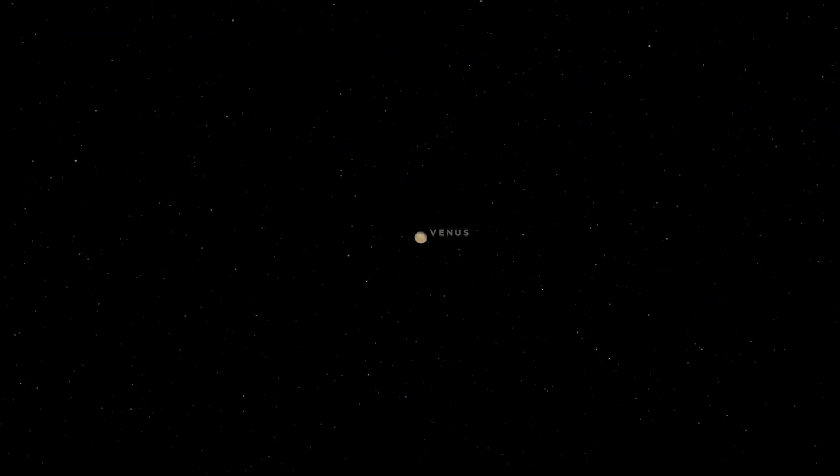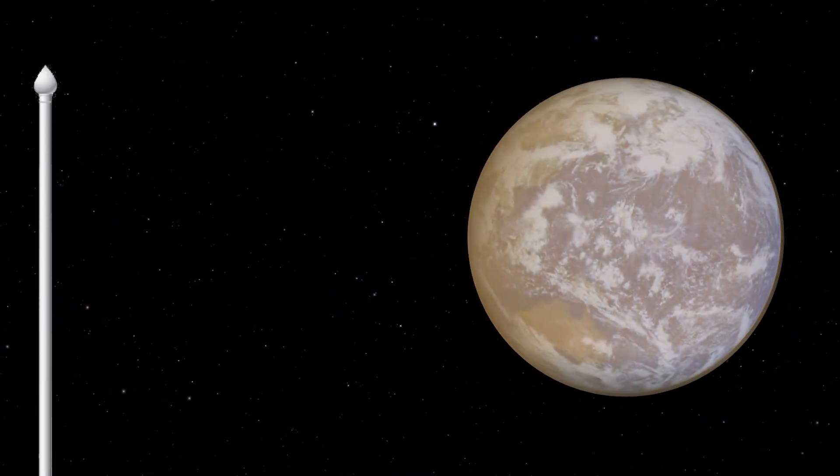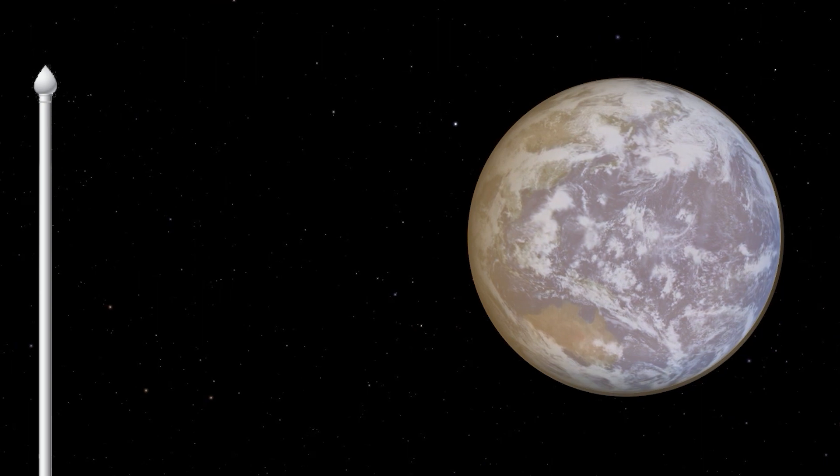Do you know which planet is called Earth's twin? Venus. Because it's similar in size and composition but its atmosphere is extremely inhospitable to life.